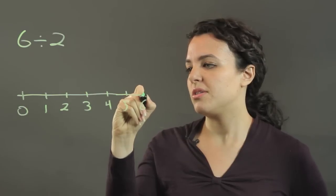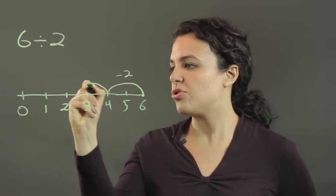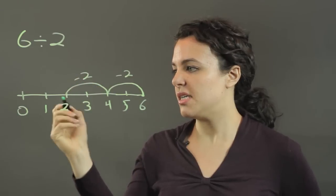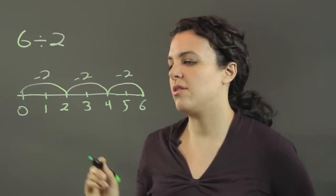So we're going to subtract 2. There's a minus 2. We're going to subtract 2 again. There's a minus 2. And we subtract 2 again and we hit 0.